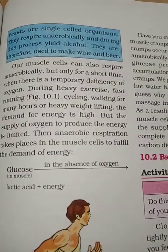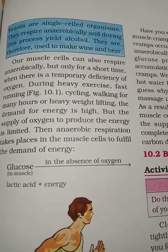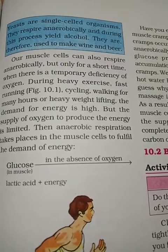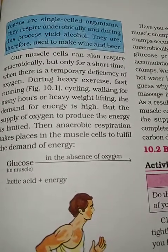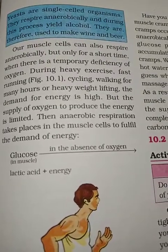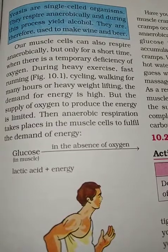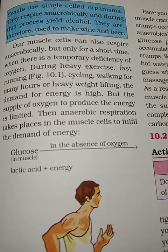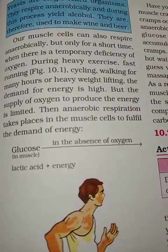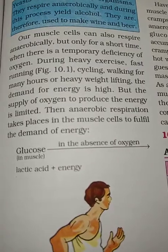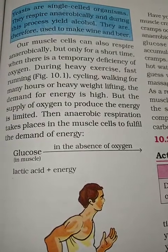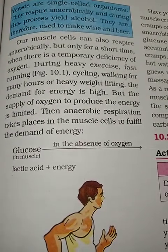Yeast are single-celled organisms. They respire anaerobically and during this process yield alcohol, and are therefore used to make wine and beer. Our muscle cells can also respire anaerobically, but only for a short time. When there is a temporary deficiency of oxygen during heavy exercise — fast running, cycling, walking for many hours, or heavy weight lifting — the demand for energy is high but the supply of oxygen is limited. Then, anaerobic respiration takes place in the muscle cells to fulfill the demand for energy.